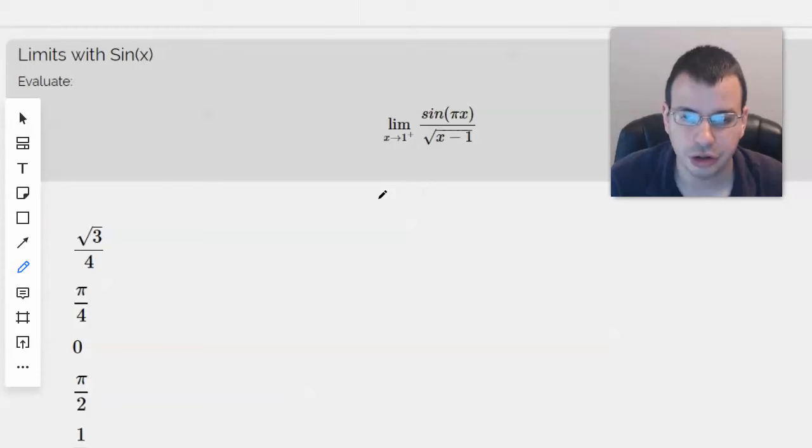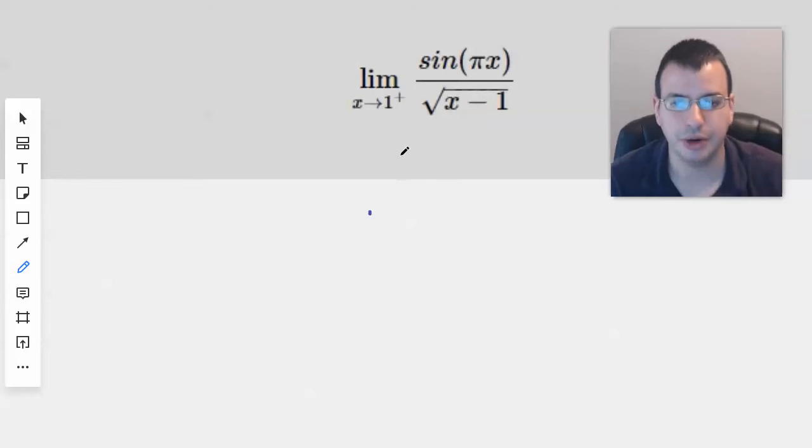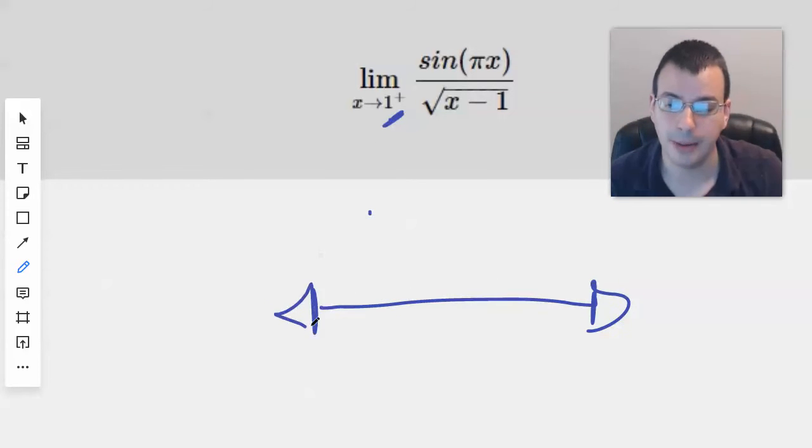Okay, so first of all, you will see this notation from time to time of 1 plus or 2 plus or whatever. The idea here is you have your number line, you have 1 here, 0 here, 2 there.